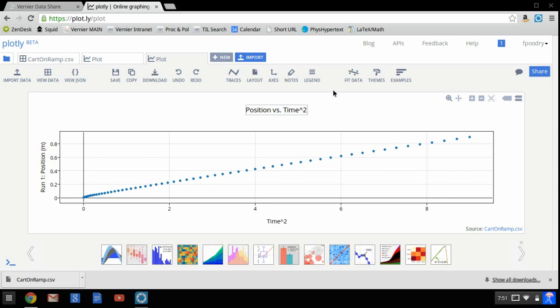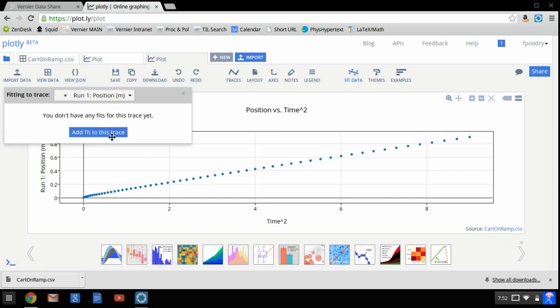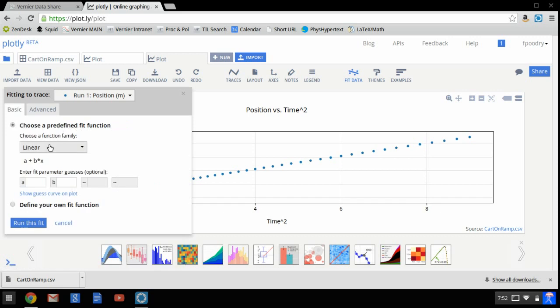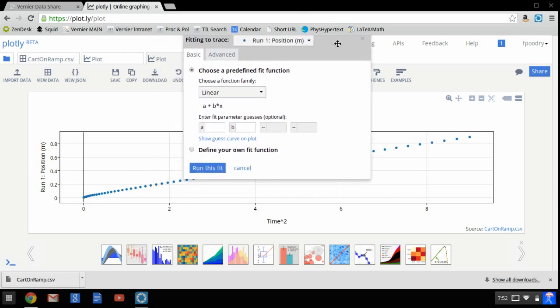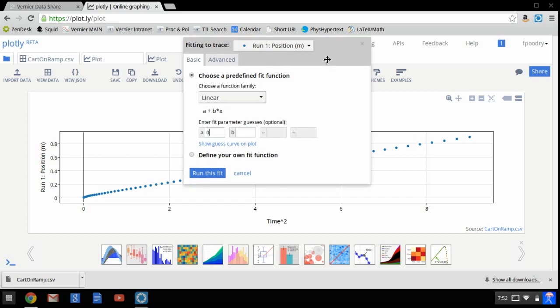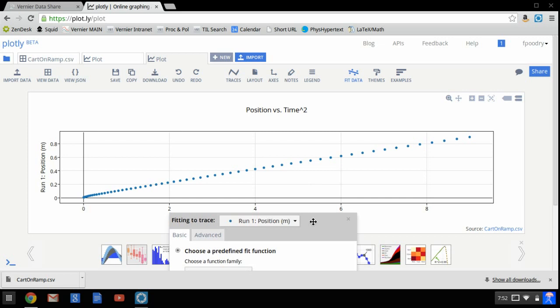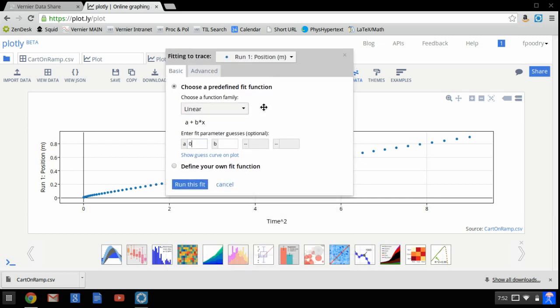And of course, what I'd really like to do is put a linear fit on this. So I'm going to choose Fit to Data, and I'm going to do a linear function. And one of the nice things about this is it actually lets you make some guesses. So when I guess, I think my intercept looks like it's about zero, so I'm going to choose that. And my slope seems to be 0.8 over 8, so that's 0.1. And I'm going to show the guess so I can see was I close.